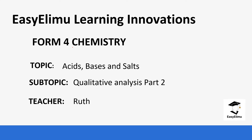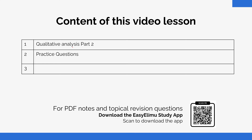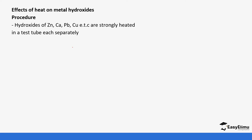We will look at tests on anions, and also look at insoluble solutions — how you can identify some of those salts. First of all, we are going to look at the effects of heat on metal hydroxides. This is very common with qualitative analysis, so we are going to look at some of these other details that come alongside tests with ammonia and sodium hydroxide.